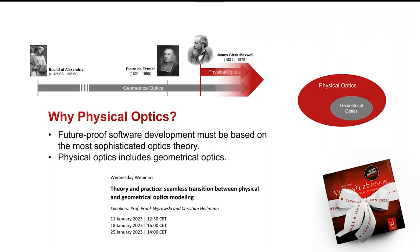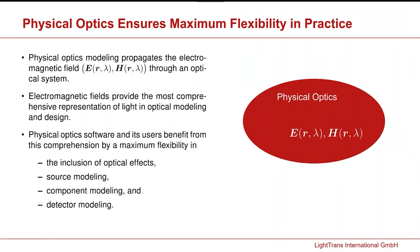Before we talk about detectors and our revolution - our quantum leap in the use of detectors in VirtualLab Fusion - it's important to start once more with the question of why we do physical optics. This detector revolution absolutely benefits from physical optics. We think that future-proof software development must be based on the most sophisticated classical optics theory we have, which is physical optics. The decision in favor of physical optics is far from being a decision against geometrical optics - I would say the opposite is true.